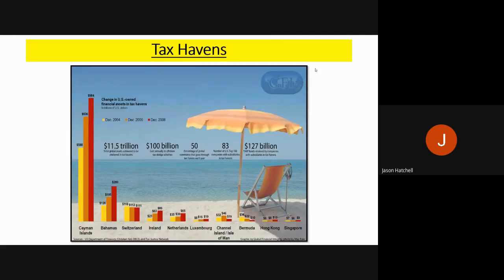There are a number of different tax havens listed, shown in a bar graph. These include the Cayman Islands — a massive tax haven — the Bahamas, Switzerland, the Republic of Ireland, Netherlands, Luxembourg, Channel Islands, Bermuda, Hong Kong and Singapore. What we can see is that the amount being put through tax havens has increased quite dramatically in most cases, especially the Cayman Islands and the Bahamas, with many more billions of US dollars being channelled through them as financial companies put their assets through these locations to reduce the amount of tax they pay.